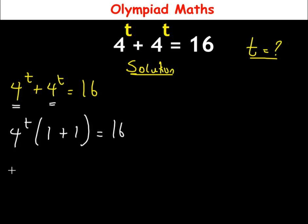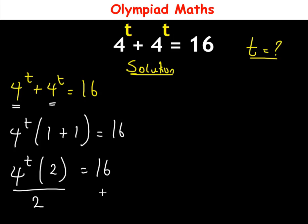From here, 4^t multiplied by the bracket (1 + 1) is 2, so we have 4^t times 2 equal to 16. The next step is to divide both sides by 2, so 4^t equals 16 over 2, which is 8.